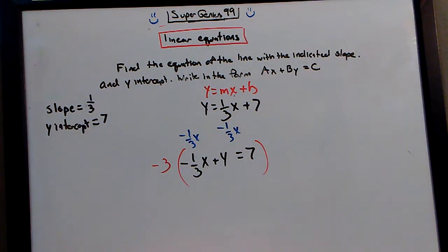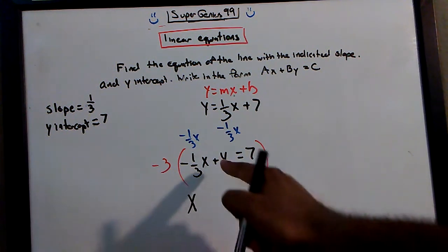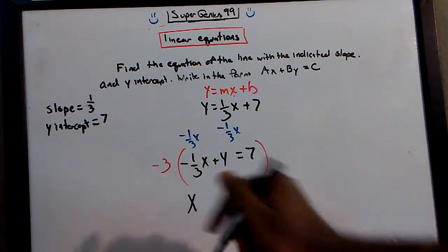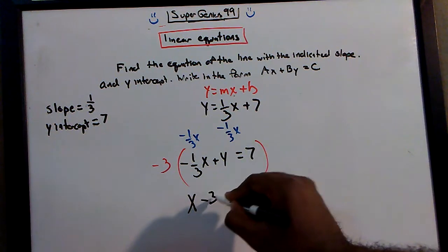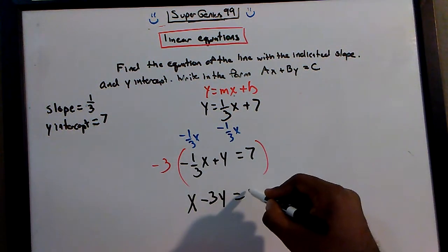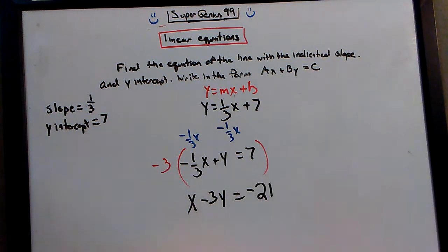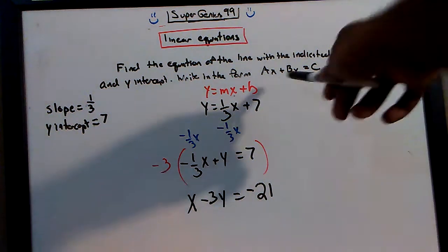Negative 3 times negative 1 third. What is that? Positive 1. Y times negative 3. And 7 times negative 3. So now we have it in this form.